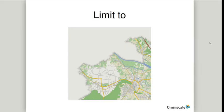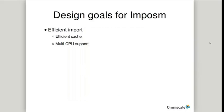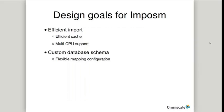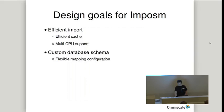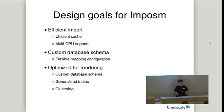So our design goals for Impossum: we wanted imports to be efficient — achieved with an efficient cache and multi-CPU support. We wanted custom database schemas — achieved with our own flexible mapping configuration file. We wanted optimizations for rendering — achieved with the custom database schema, by having generalized tables, and by adding clustering.